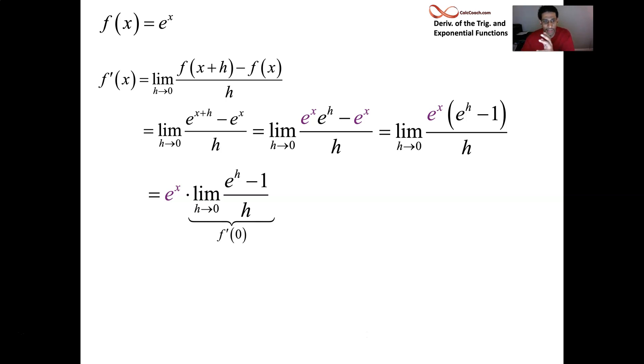We have the function e to the x in red here. And then I have the line y equals x drawn in as well. And then I have the tangent line drawn in at x equals zero. And the slope of that tangent line is the same as the slope of the line y equals x: one. So that limit is one.